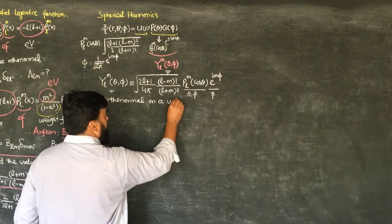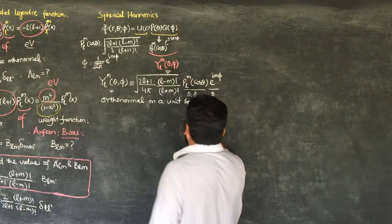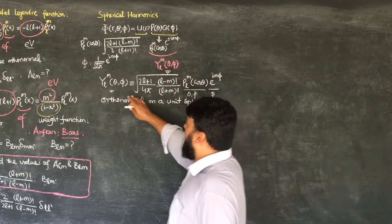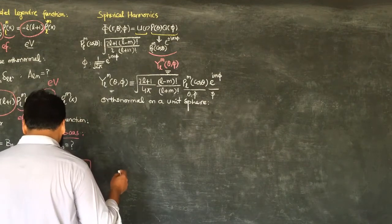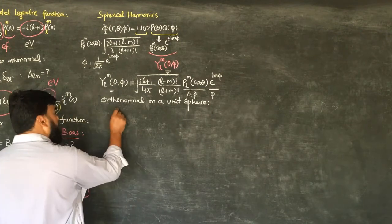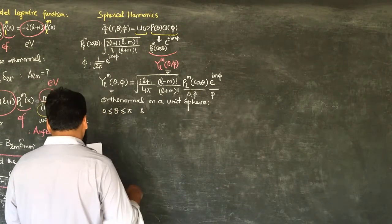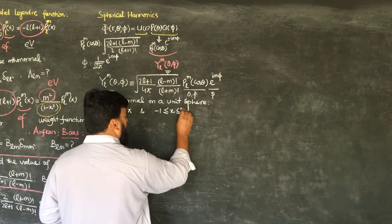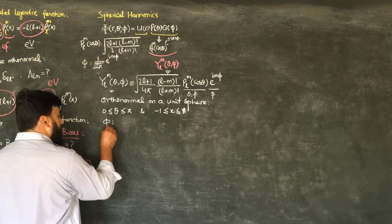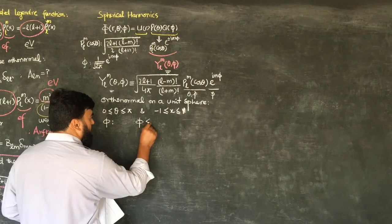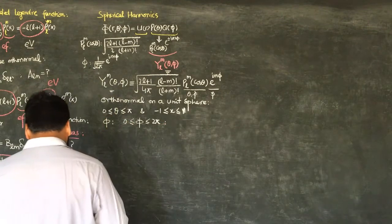These spherical harmonics are orthonormal on a unit sphere — when we take the unit sphere, meaning the radius of the sphere is 1, the angular components are given by the spherical harmonics. For theta, we write 0 ≤ theta ≤ π, or in terms of x, −1 ≤ x ≤ 1. For phi, the value ranges between 0 and 2π, as we have in spherical polar coordinates.